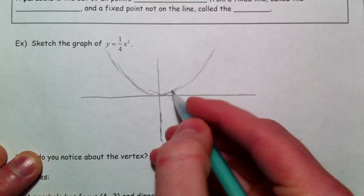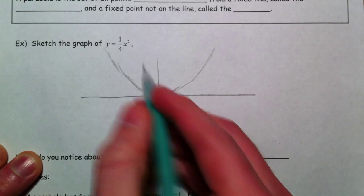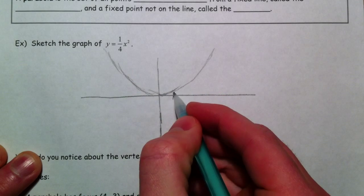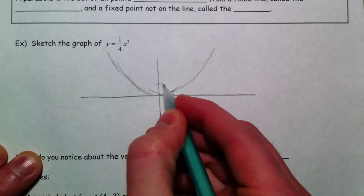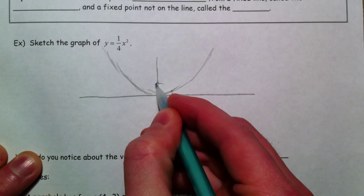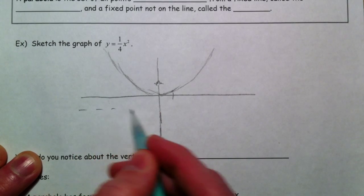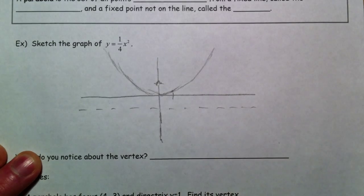And so they open something like this. And again, if you wanted to plot points, you could do 1, 1 squared is 1, times 1 fourth would give you 1 fourth, and so on and so forth. But our effort is not to plot points, but to talk about different things that parabolas have.